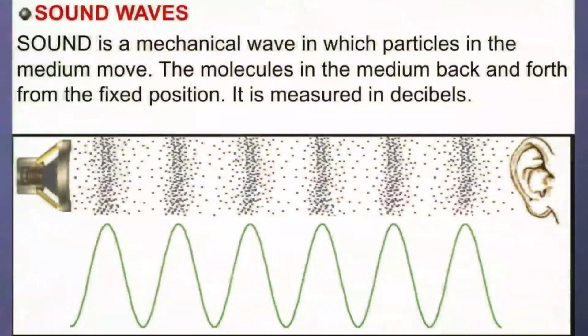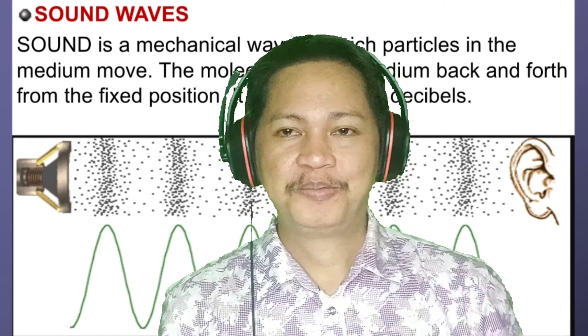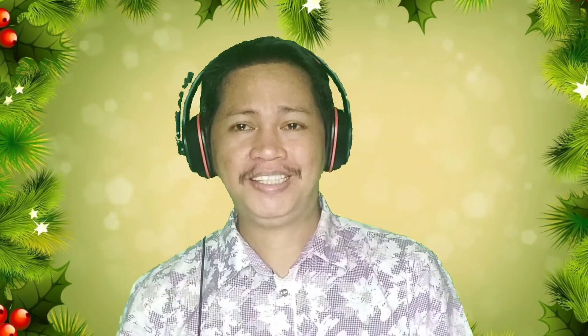Now that you know the particle model of matter, I will explain how the ear hears sound. Sound is a mechanical wave in which particles in the medium move back and forth from a fixed position, and it is measured in decibels. The medium — which can be solid, liquid, or gas — is the one that carries the sound wave. My question is: how does that sound travel from its source to your ear?